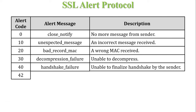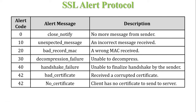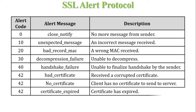Alert code 42 is used for three different situations: bad certificate (received a corrupted certificate), no certificate (client has no certificate to send to the server), and certificate expired (certificate has expired on either client or server side). Whenever alert code 42 is sent, it means there is an issue with the digital certificate.